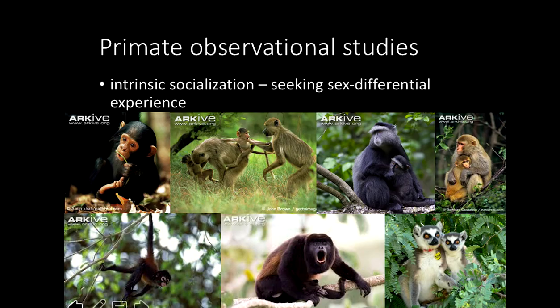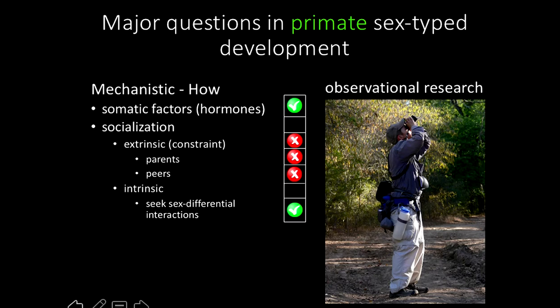We see similar phenomena in lots of primate species — in chimpanzees, baboons, blue monkeys, macaques, spider monkeys, howling monkeys, and lemurs — where juveniles themselves seek out and spend more time around different sets of individuals in their social groups. This is a common phenomenon among non-human primates. If you think about it, it's a necessary precursor to social learning through behavioral modeling from those social partners.